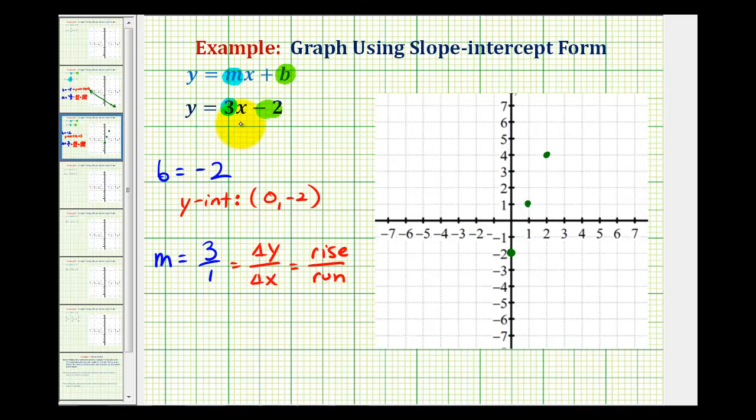So our line, y equals 3x minus 2, passes through these 3 points and will look something like this.